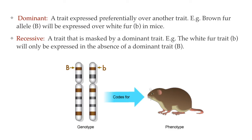Mendel also used the terms dominant and recessive to explain whether a trait will overpower another. Dominant traits are expressed preferentially over another trait. For example, a brown fur allele will be expressed over a white fur allele — so brown fur is dominant and white fur is recessive. By convention, we use a capital letter for the dominant trait and a lowercase letter for the recessive trait. Often the first letter of the dominant trait is used — so for brown coloration, we use capital B for brown and lowercase b for white.